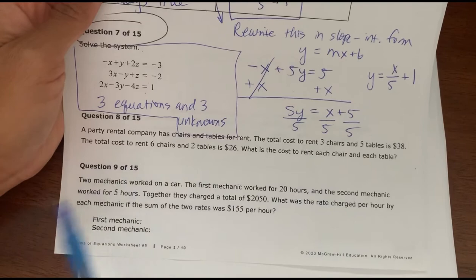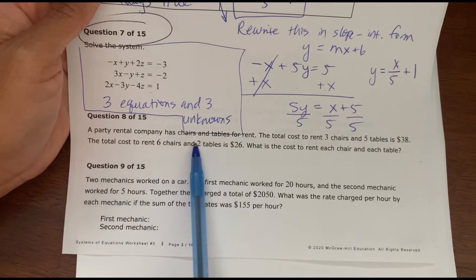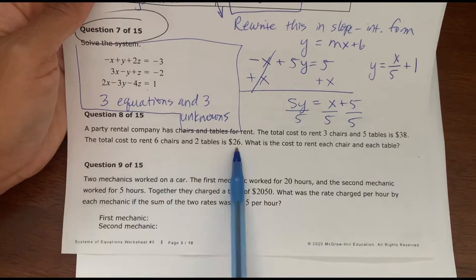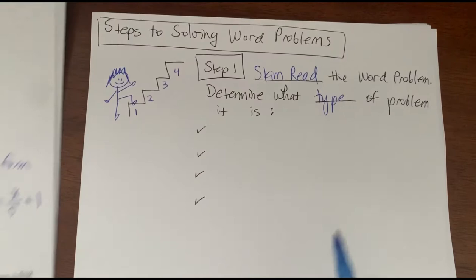You want to understand the situation. The situation here is: there's a party going on, there are chairs and tables that need to be rented, there's a cost for each table and chair, and we want to know what is the cost of one chair and what is the cost of one table.